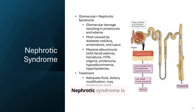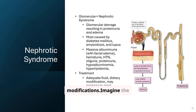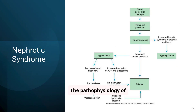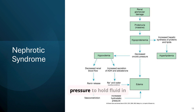Nephrotic syndrome is characterized by glomerular damage leading to proteinuria and edema. Massive albuminuria, hematuria, and hypertension are common findings. Treatment focuses on managing fluid balance and dietary modifications. Imagine the kidney's filter getting so leaky that protein spills into urine — now there's not enough protein in the blood to hold fluid in, so it leaks into tissues. Kids swell up, especially around the eyes. Proteinuria leads to hypoproteinemia, decreased oncotic pressure, and ultimately edema. The liver tries to compensate by making more lipids, hence the hyperlipidemia seen in labs.